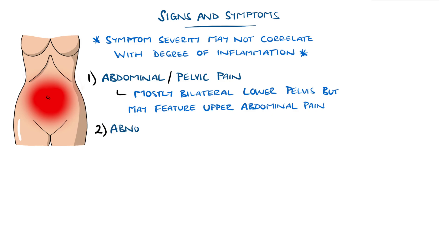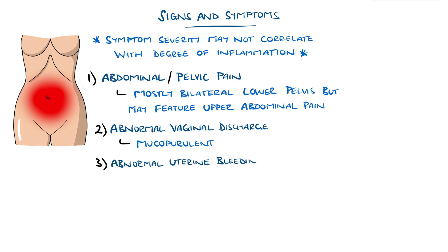Abnormal cervical or vaginal discharge may be mucopurulent, often yellow or green. Abnormal uterine bleeding — including irregular vaginal bleeding, especially post-coitally or intermenstrual bleeding — can also occur. Inflammation of the uterus, termed endometritis, can lead to this irregular bleeding.